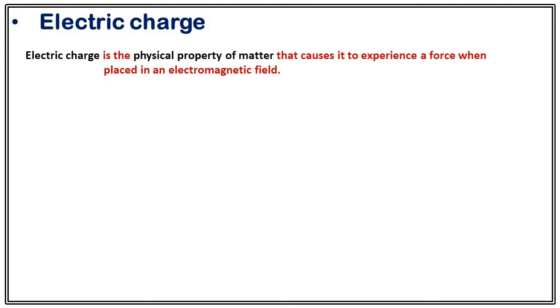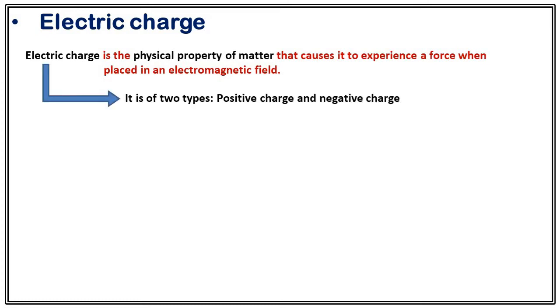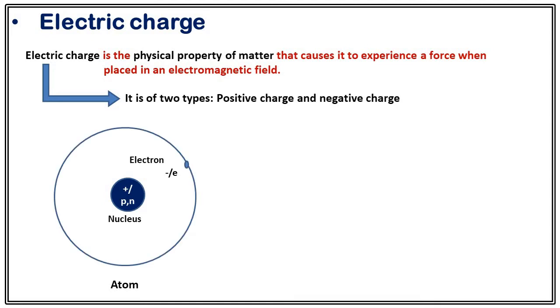Since the whole topic revolves around electric charge, what is electric charge? Electric charge is a physical property of matter that causes it to experience a force when placed in an electromagnetic field. Electric charges can be of two types: positive charge and negative charge. Let's understand this from a fundamental point of view. We all know the atom — it consists of a nucleus and electrons. The nucleus is in the center and itself consists of protons and neutrons.